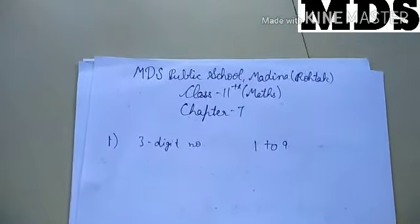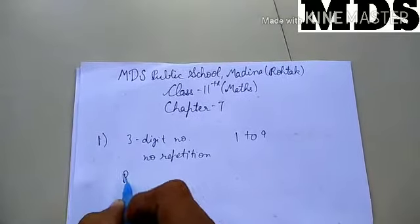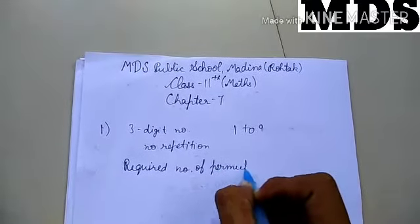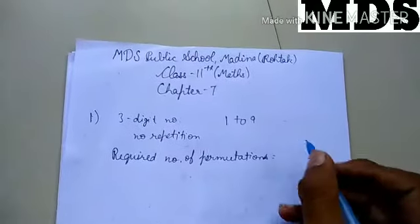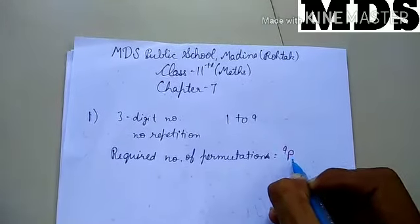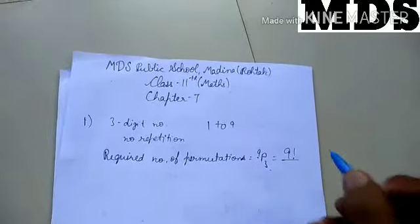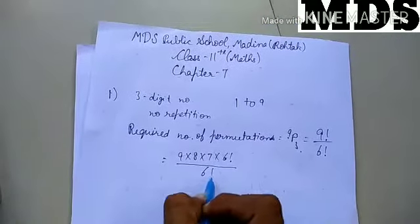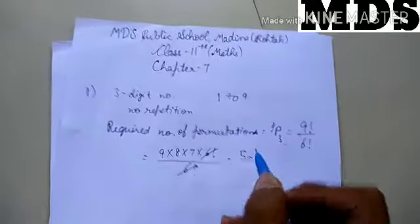Digits given are 1 to 9, and no repetition should be there. So the required number of permutations will be 9P3. Total 9 digits are there and we are taking 3 at a time, so this will be 9 factorial divided by 6 factorial, which gives 9 × 8 × 7 = 504.